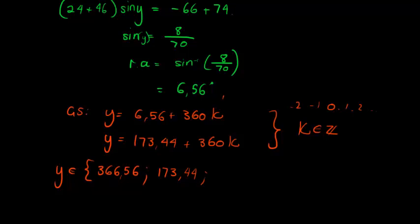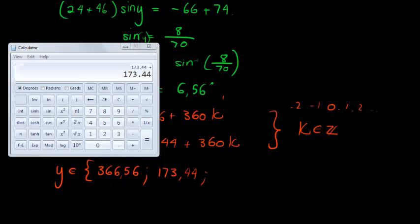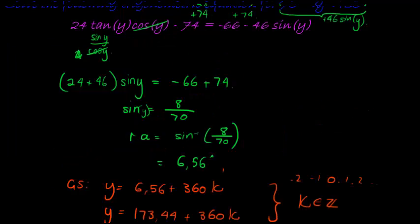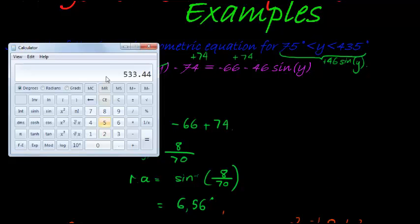If I add 173.44 plus 360, 360 is equal to 533. That's too big, maximum allowed is 435. That's too big. Let's subtract.